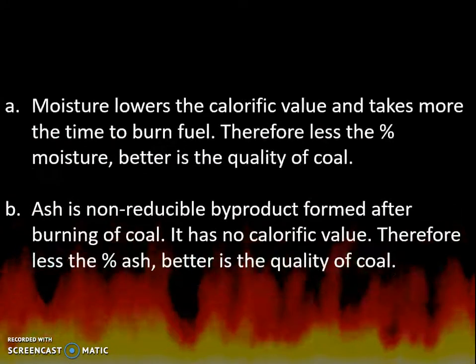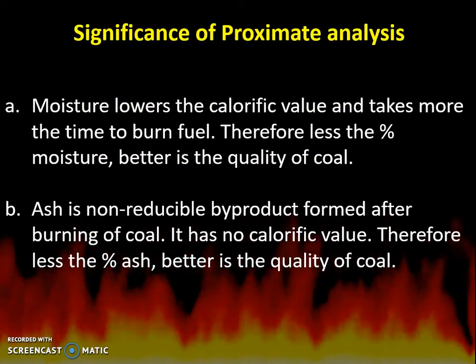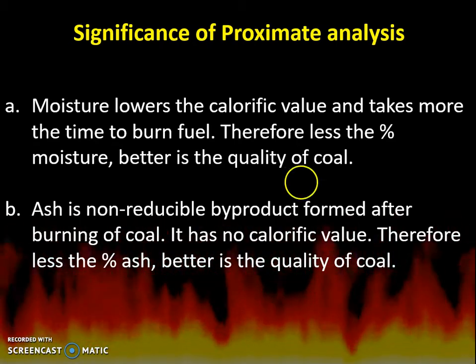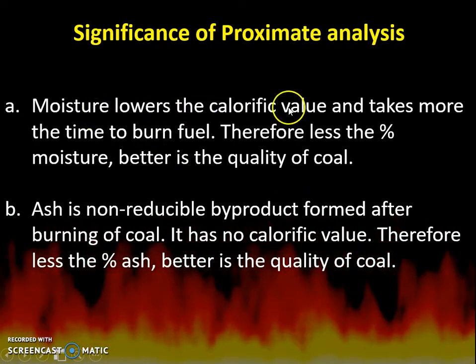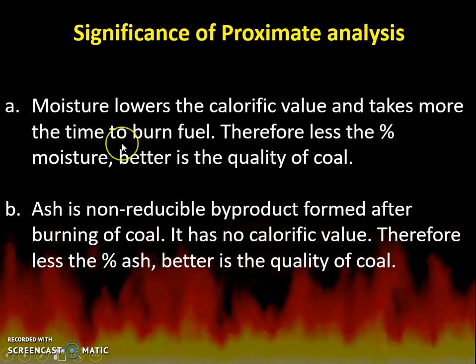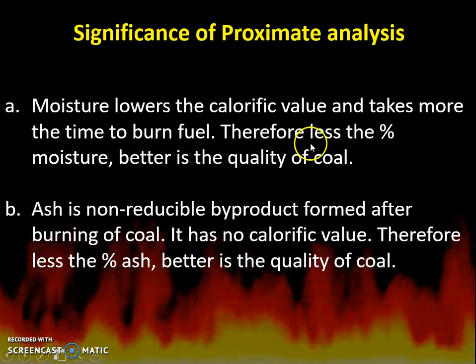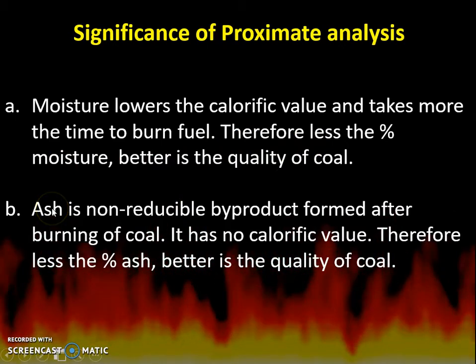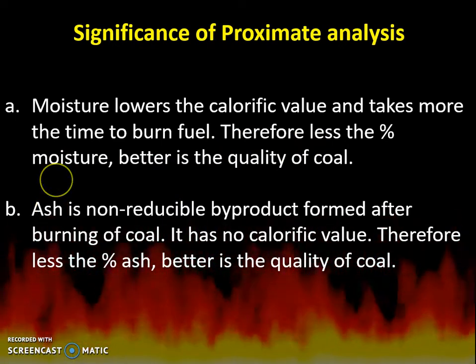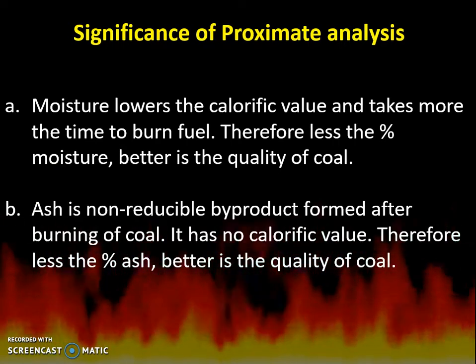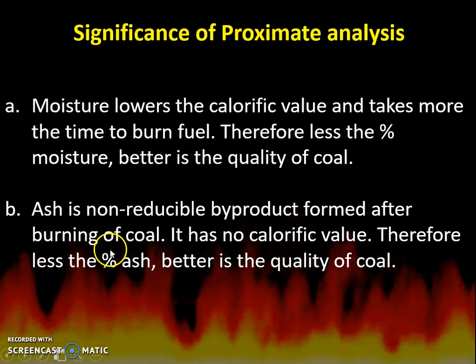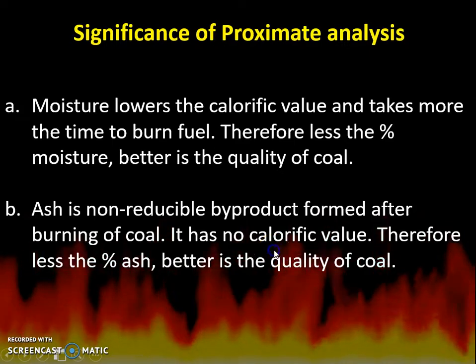Now for the significance of proximate analysis: First, moisture lowers the calorific value and takes more time to burn the fuel — therefore, less the percentage of moisture, better is the quality of coal. Second, ash is a non-combustible byproduct which cannot be burned and has no calorific value — therefore, lower the amount of ash, better is the quality of coal.